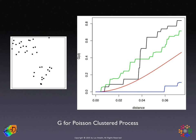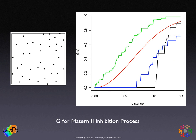For a simulated clustered pattern — a Poisson cluster process — the curve climbs out of the envelope above the green line for a range of distances, and those ranges can be interpreted in terms of processes that may have generated the points. The opposite is a dispersed or regular point pattern, generated using a Matérn 2 process. Here, at small distances the black line is clearly outside the envelope below it, indicating inhibition or regular patterns, though it re-enters the envelope at larger distances.